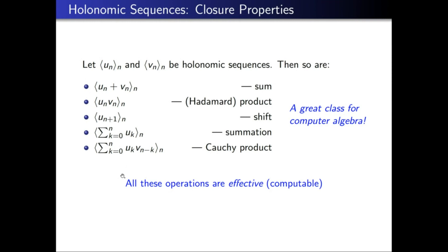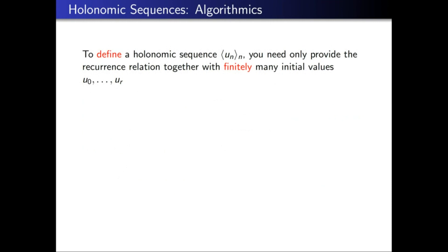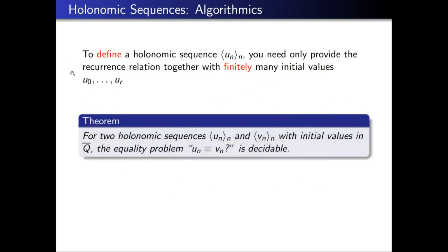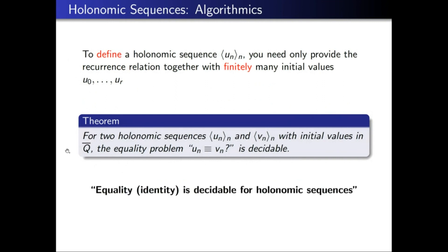In terms of algorithms, a holonomic sequence is specified finitely by its recurrence relation together with finitely many initial values. The main result is that given two holonomic sequences u_n and v_n with initial values in the algebraic numbers, the equality problem — whether u_n is identically equal to v_n — is decidable. The slogan: equality is decidable for holonomic sequences.